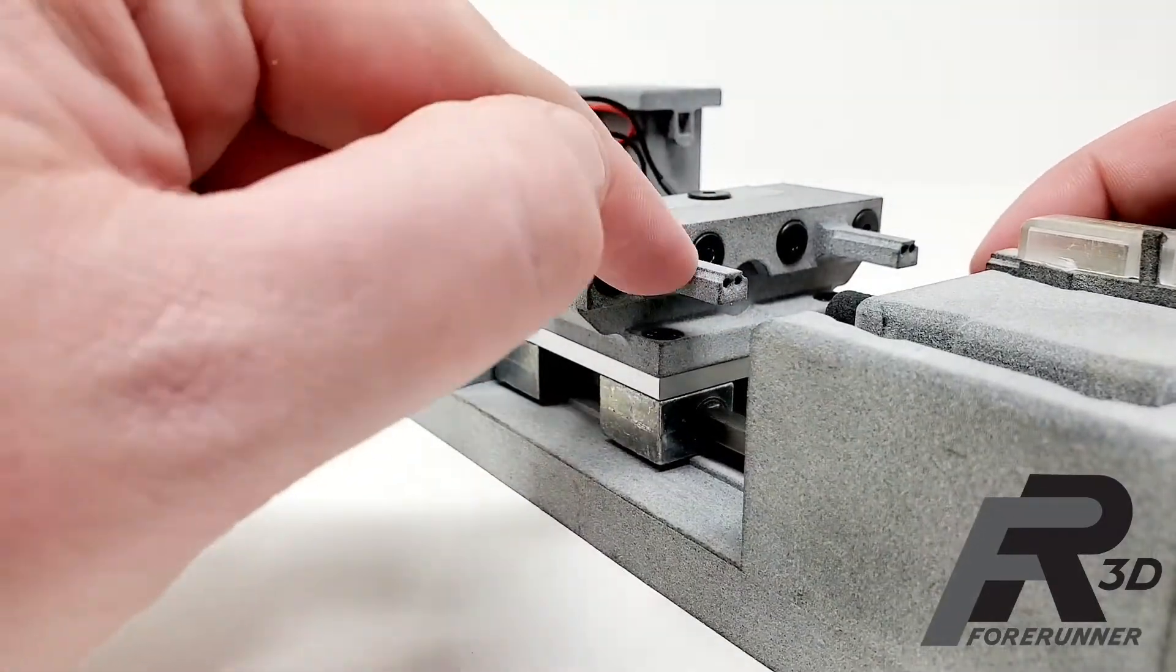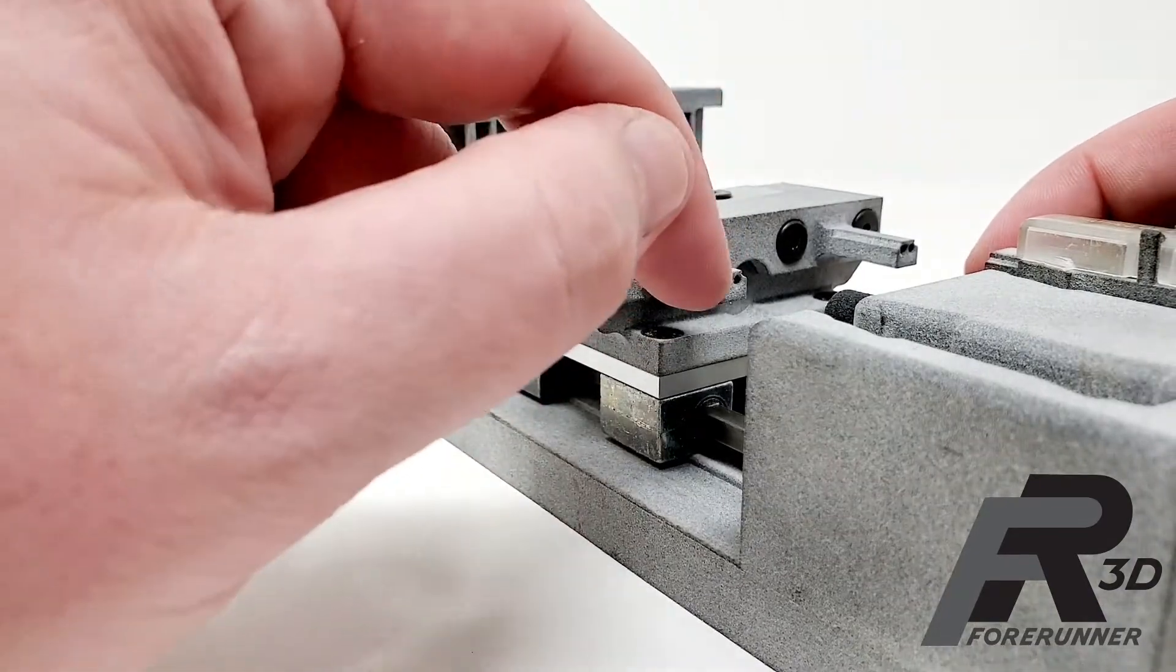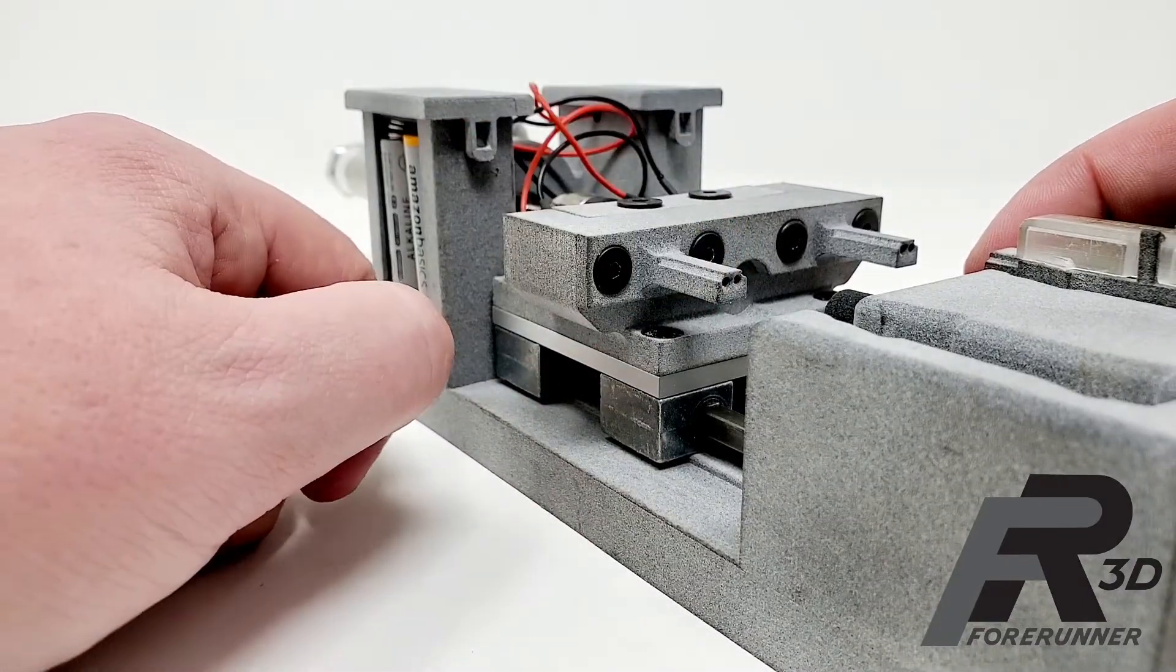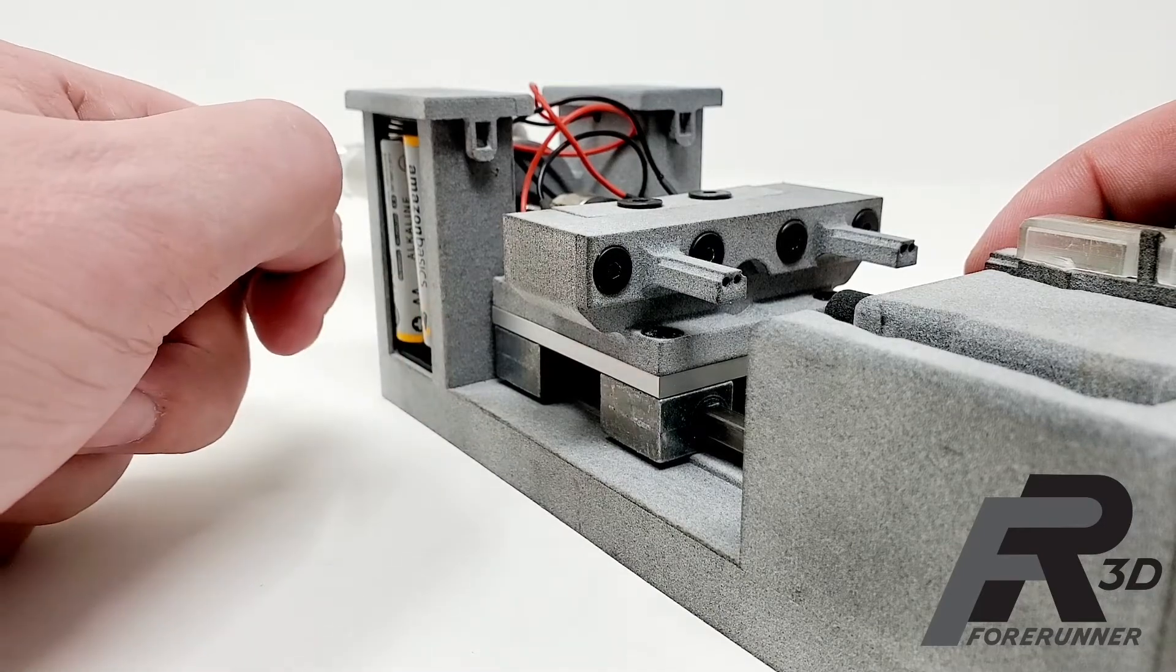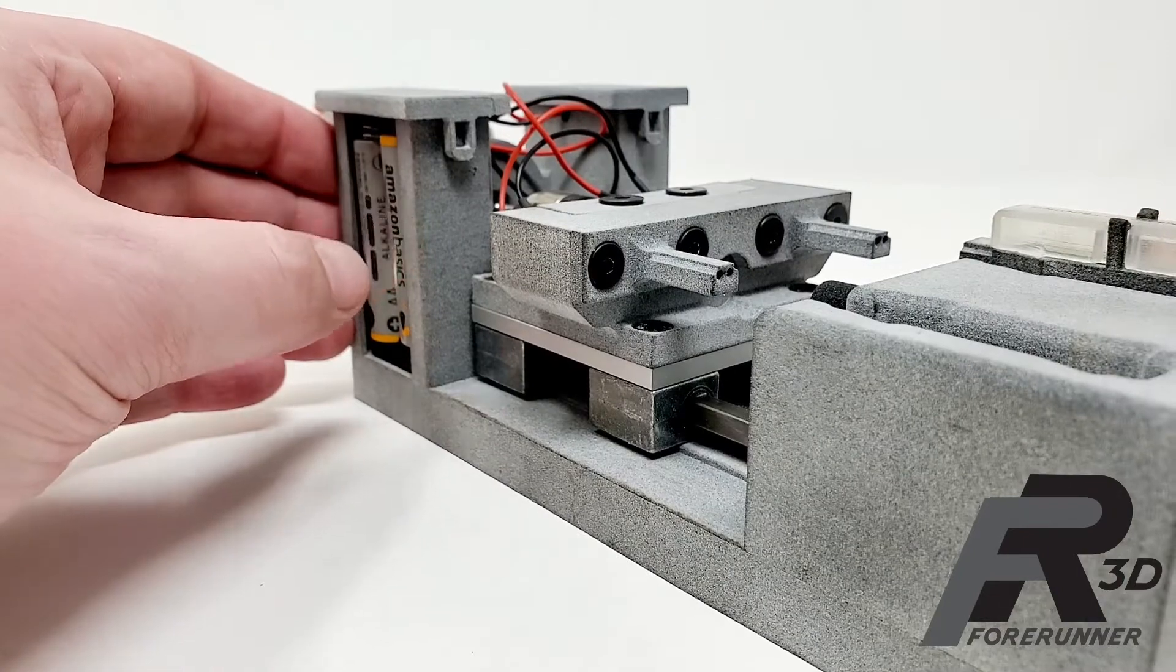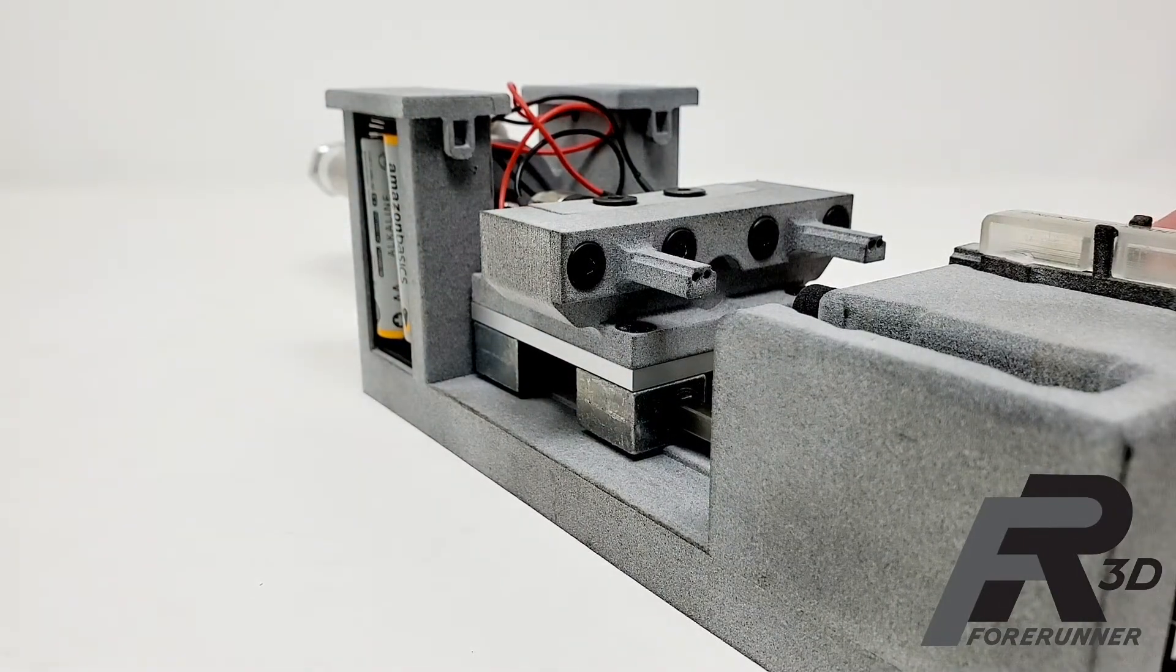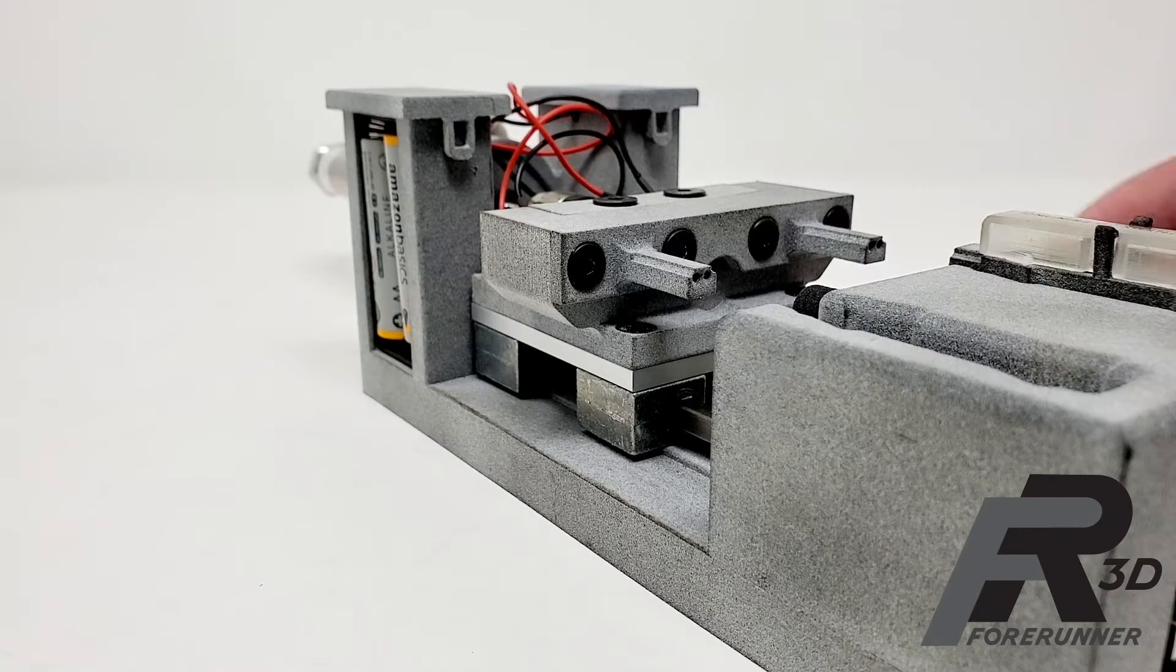If you have square channels or if you have weird features or anything like that, machining these can be a real pain in the butt. There's actually companies out there that specialize in pretty much just making these for automation companies so they don't have to mess with it.